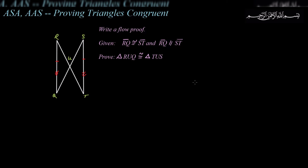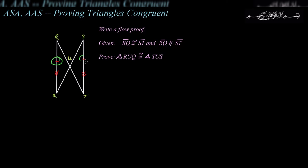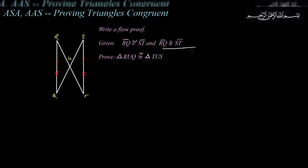The next example is a flow proof. Given: RQ is congruent to ST — already marked in the diagram. Also given: RQ is parallel to ST — also marked. We are asked to prove that triangle RUQ is congruent to triangle TUS, proving those two smaller triangles congruent. This involves parallel lines, so we'll need to recall our parallel line theorems.